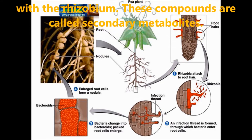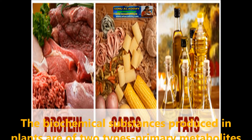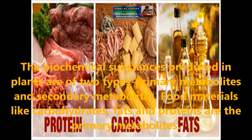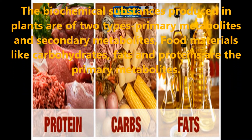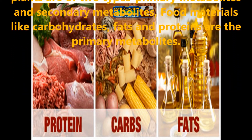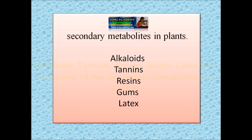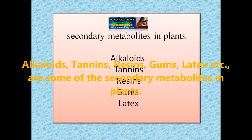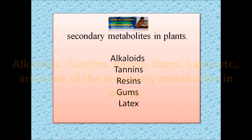These compounds are called secondary metabolites. The biochemical substances produced in plants are of two types: primary metabolites and secondary metabolites. Food materials like carbohydrates, fats and proteins are the primary metabolites. Alkaloids, tannins, resins, gums and latex are some of the secondary metabolic products in plants.